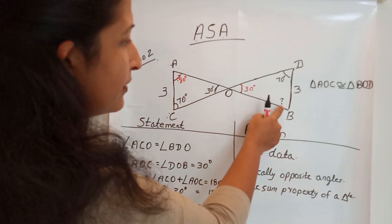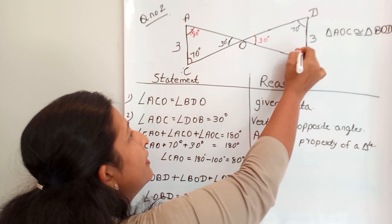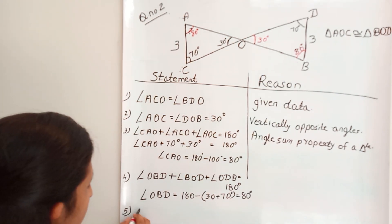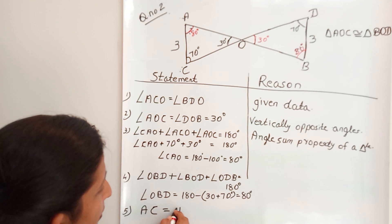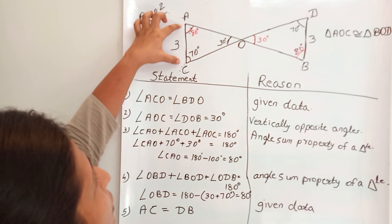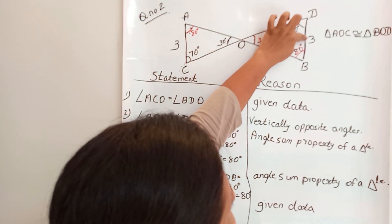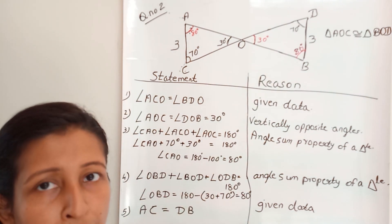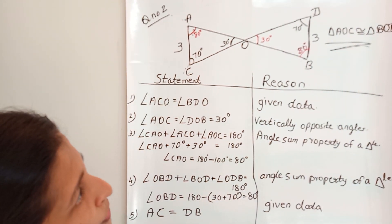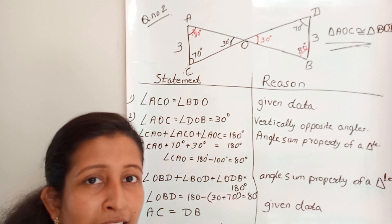Now we find angle OBD, which is also 80 degrees. Statement 5: AC is equal to DB, which is the given side of length 3. The reason is: given. So we have an included side and two angles on each triangle — all three corresponding elements are equal — and therefore triangle AOC is congruent to triangle BOD by ASA criteria.